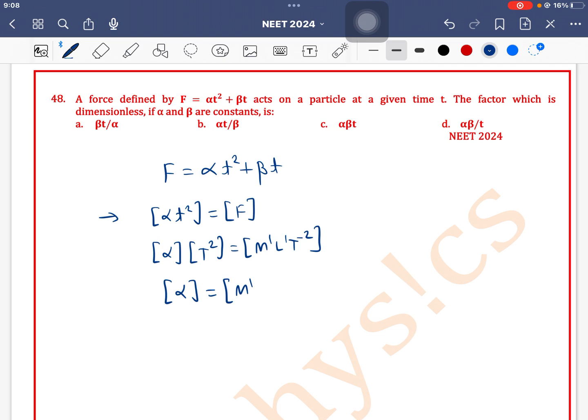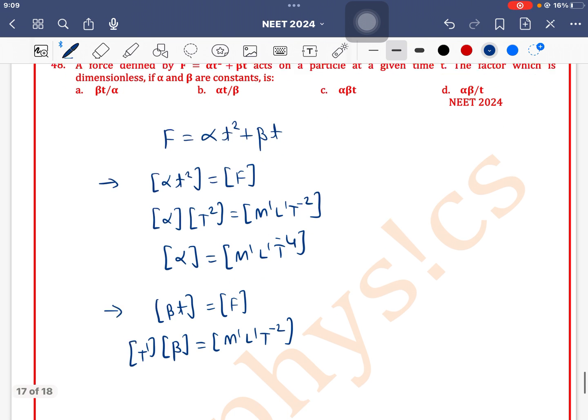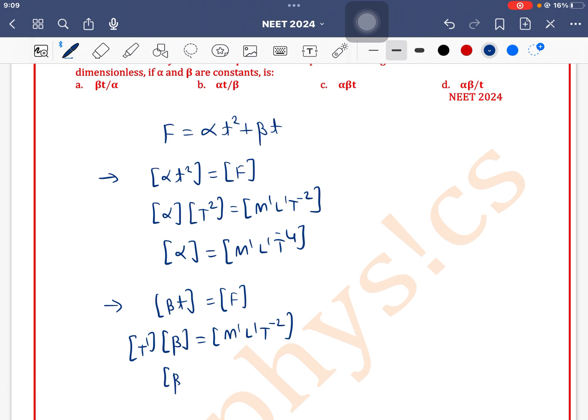And for the dimension of beta, we can take dimension of beta times t equals dimension of force. So dimension of beta equals dimension of force, which is m¹l¹t⁻², divided by dimension of t, which is t¹. Therefore, dimension of beta is m¹l¹t⁻³.